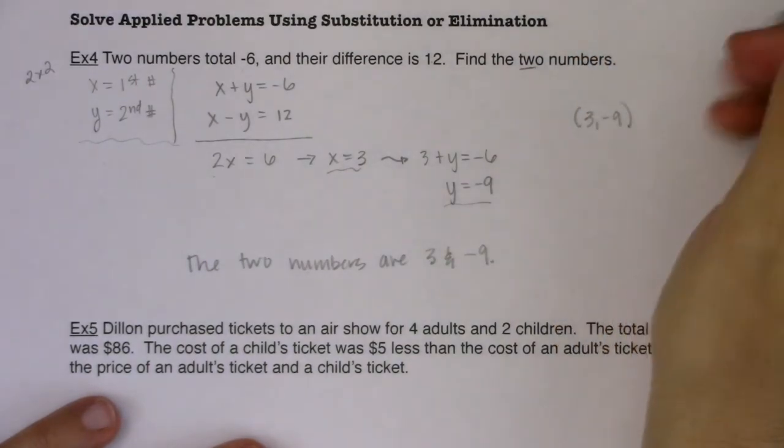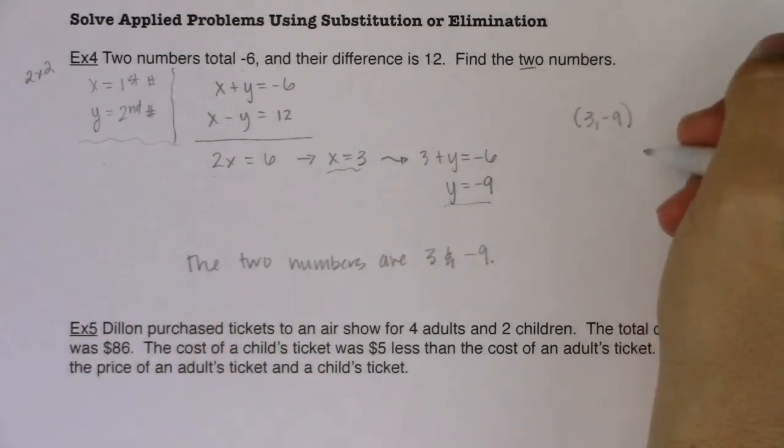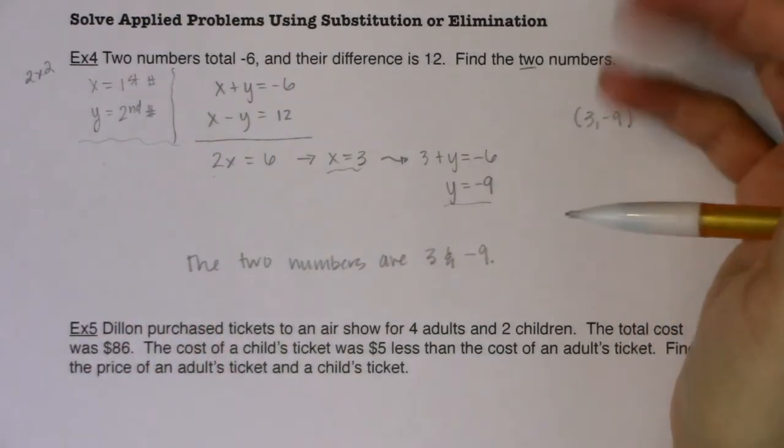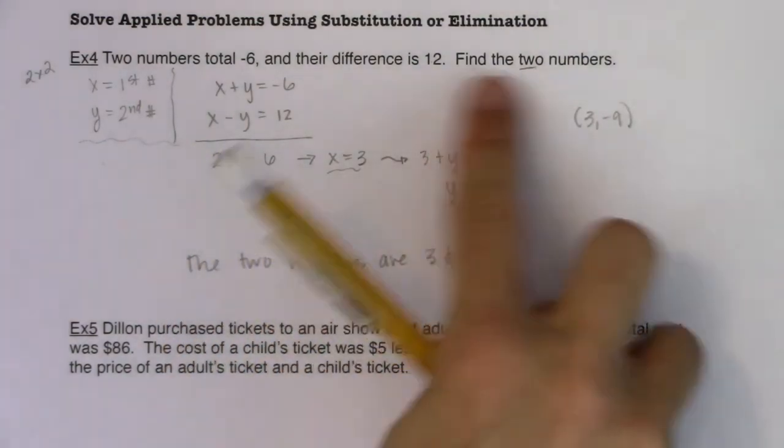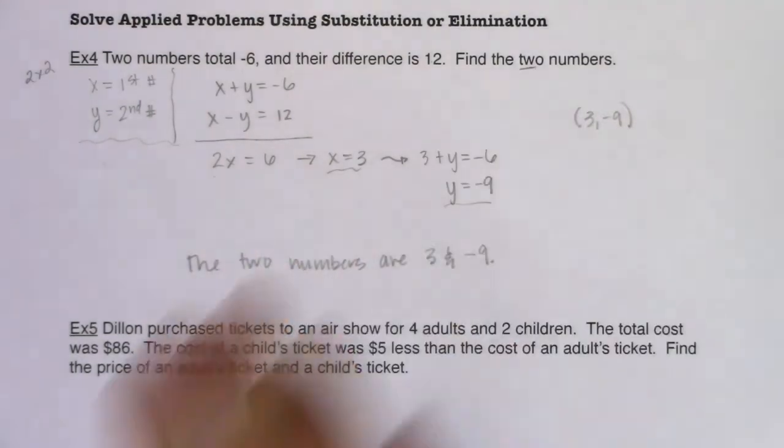If you just tell me three and negative nine, which is completely correct here, but when we get into more applied problems, if you don't have units on your answers, I would dock you for that. Start to get in the habit. Finding two numbers? These are the two numbers. They don't have units because they are just numbers.